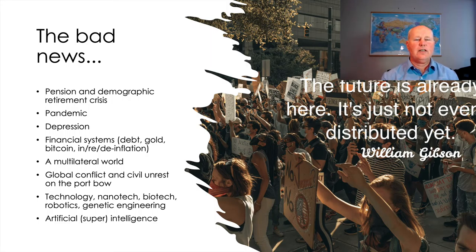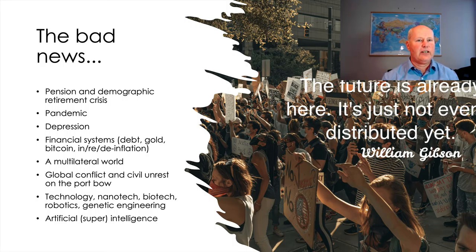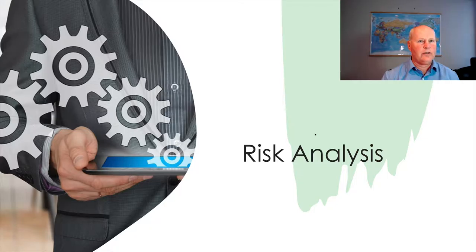We've also got technology — nanotechnology, biotechnology, genetic engineering, robotics, and artificial intelligence — evolving at an incredible pace. Any organisation or country that gets to be six months ahead in artificial intelligence has a leap, an order of magnitude that is just self-perpetuating. I wanted to highlight all this and some of the types of risk analysis, and why some current models of risk aren't working, because we're coming into a new world.